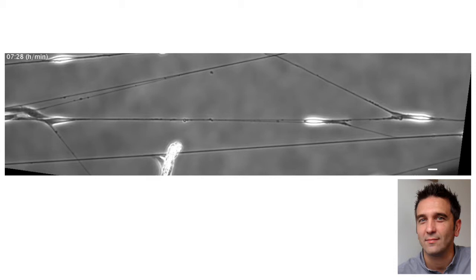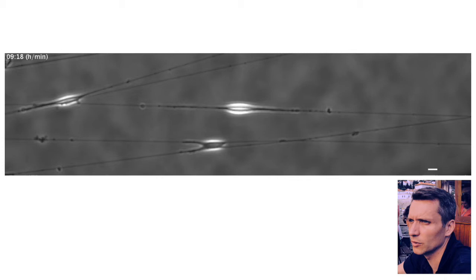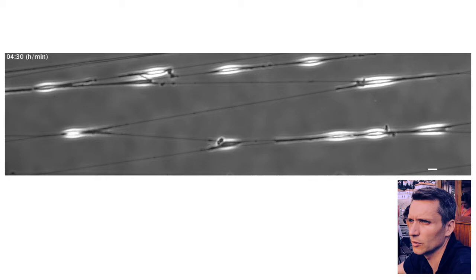The fin — this protrusion — was always leading the way, meaning that the cell first probes with the fin, then starts to contract and migrate on that fiber. This means the fin contributes not only to cell body extension but to cell polarity and migration in one particular direction.